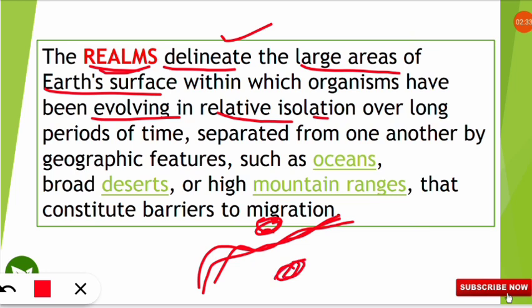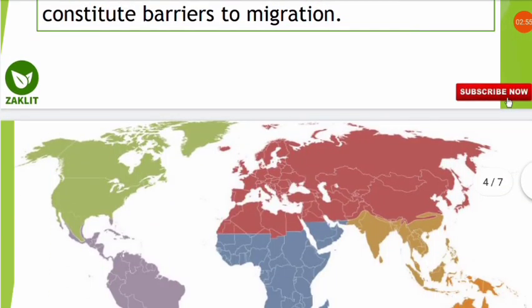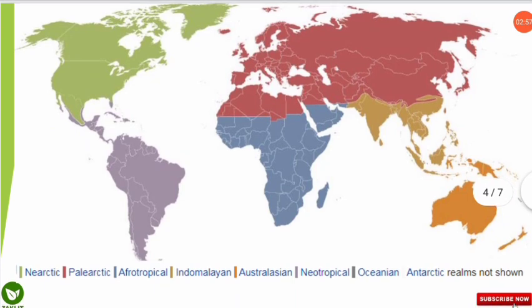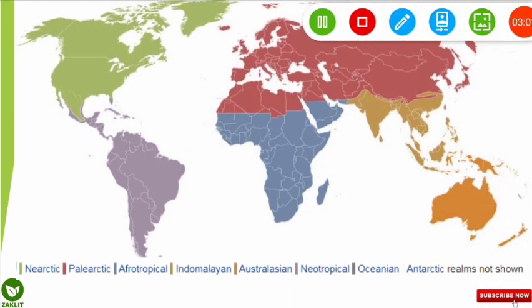Over long periods of time, oceans, deserts, and mountain ranges have protected species from mixing — meaning species evolve differently because of these barriers to migration. These features are what delineate and demarcate the realms. There are several distribution and classification systems proposed by different scientists, but we will focus on the basic classification.